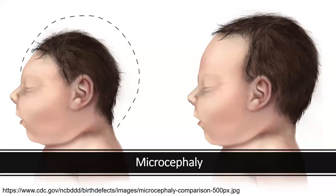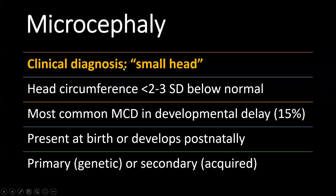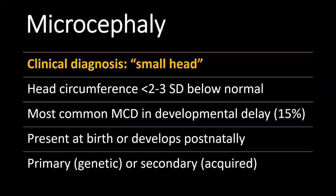Microcephaly is not a radiological diagnosis — it's a clinical diagnosis. It literally means small head, and is defined as a head circumference that is two or three standard deviations below the norm (two is mostly used for fetuses and three for neonates). This will normally be mentioned on your radiological request form. Microcephalies are the most common kind of cortical malformation in patients with developmental delay and can be present at birth or develop postnatally.